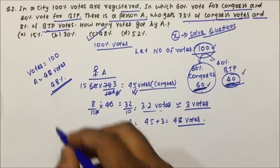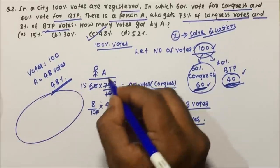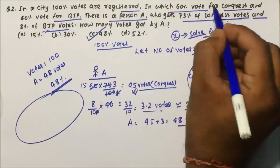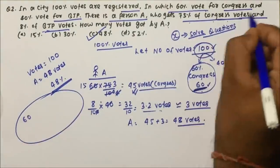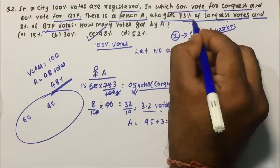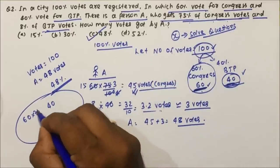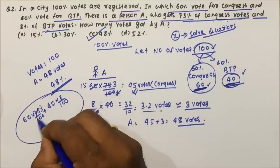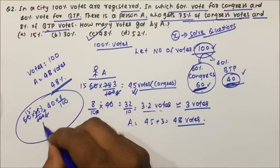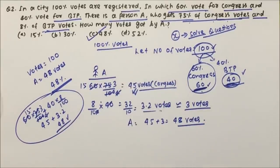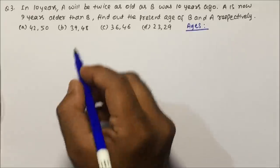This is a very simple question we can solve within 30 seconds. Total votes is 100; 60 votes go to Congress and 40 to BJP. Person A gets 75% from Congress — that is 3/4 of 60, which is 45 — plus 8% from BJP which is 3.2, giving a total of approximately 48, meaning 48%. That's the quick approach for this percentage question.